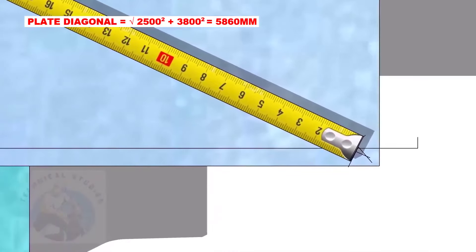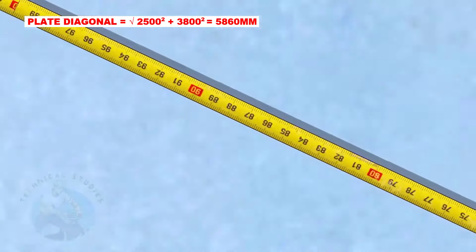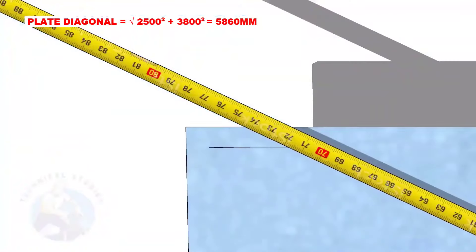Starting from this corner, draw a diagonal arc of 5860 millimeters to the opposite corner and cut the previous arc.